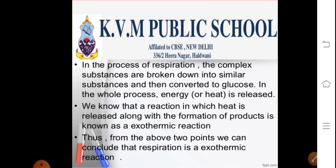Talking about respiration, it is a process where glucose gets oxidized so as to produce carbon dioxide and water, producing 38 molecules of adenosine triphosphate (ATP), where two get utilized in the shuttle pathway, thus forming a total of 36 ATP. So respiration is also an example of exothermic reaction. Both aerobic as well as anaerobic respiration are exothermic in nature. In anaerobic respiration, which occurs in the absence of oxygen, there is less amount of energy produced — that is, two ATP molecules are produced.